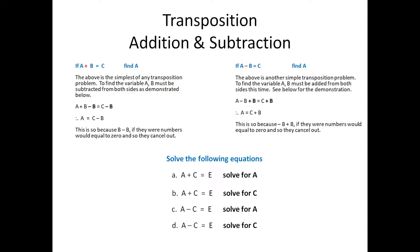We are going to do transposition with addition and subtraction. If a plus b is equal to c and you are supposed to find the subject of the formula, which is a, the above is the simplest of all transposition problems. To find the variable a, b must be subtracted from both sides as demonstrated below.